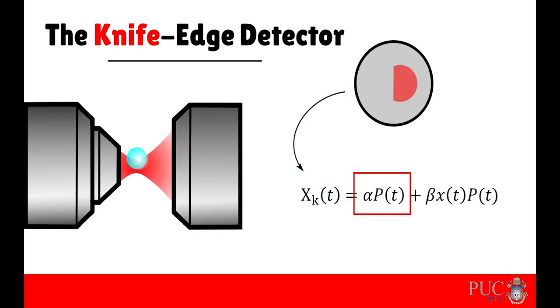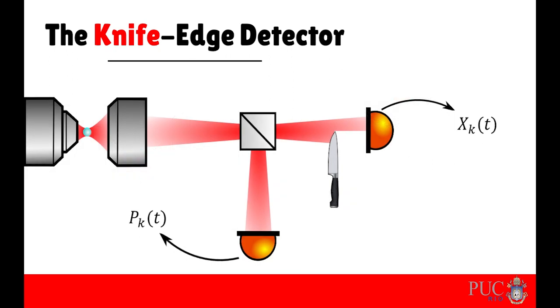Therefore, we need to divide XK by P at each instant of time to get the actual particle position. To do that, we can add a beam splitter to our setup and use the reflected beam to monitor the collected laser power.